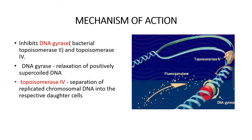The mechanism of action of fluoroquinolones is basically inhibition of the DNA gyrase enzyme. DNA gyrase is a bacterial counterpart of topoisomerase 2 enzyme, and fluoroquinolones also inhibit topoisomerase 4. DNA gyrase is responsible for relaxation of the positively supercoiled DNA during cell division, and topoisomerase 4 is responsible for separation of replicated chromosomal DNA into daughter cells. Inhibition of these two enzymes affects cell division in bacteria.